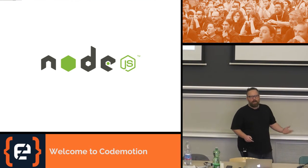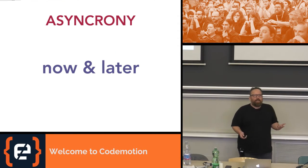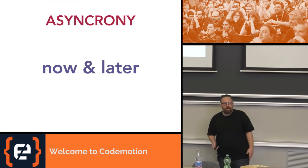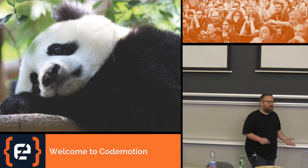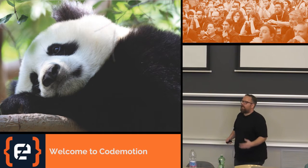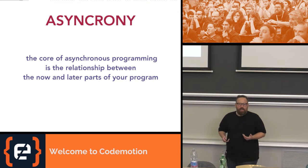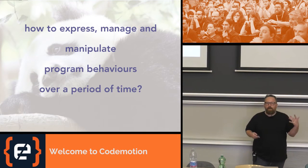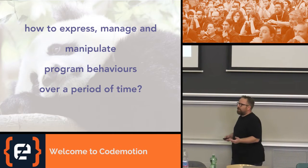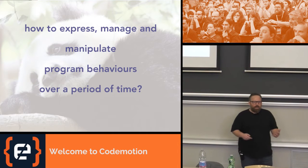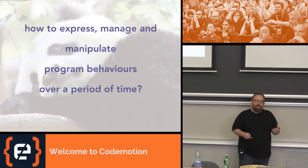So let's talk about the evolution of JavaScript and how it handles asynchrony in general. What's asynchrony? Basically, asynchrony is the relationship between now and later. I was a sad panda at the beginning because I wasn't understanding that quite clearly, coming from PHP, a bit of Python, a bit of Java, C. I couldn't really grasp the idea of asynchrony in JavaScript. The issue I had was: how can I express and manipulate program behaviors over a period of time in an asynchronous way with JavaScript?